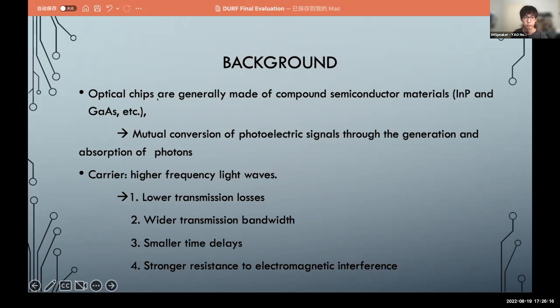So we focus on optical chips, which is a new field and is potential. They are generally made of compound semiconductor materials and can mutually convert photoelectric signals through the generation and absorption of photons. Instead of electrons as carriers, they use higher frequency light waves, so it has advantages of low loss, wider bandwidth, smaller delays, and stronger resistance.